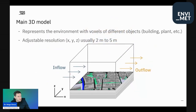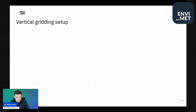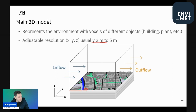First off, the main 3D model represents the alignment with voxels of different objects. Every one of these different voxels — which can vary in size; typically resolutions are between 2 and 5 meters — can either be part of a building, part of a plant, part of the soil, or part of the atmosphere. The user basically decides which grid cell belongs to what.